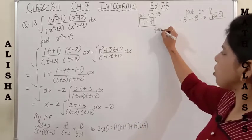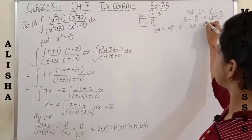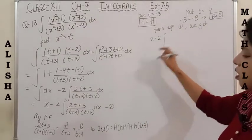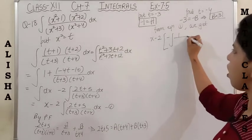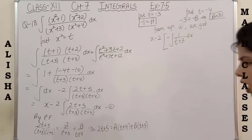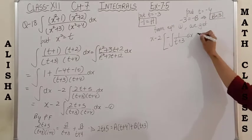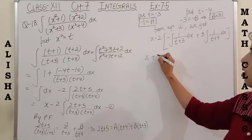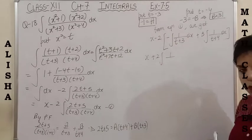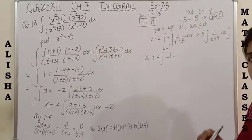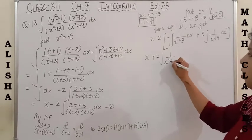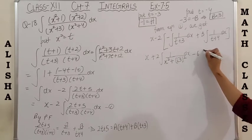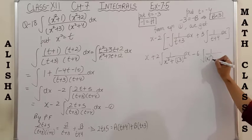Now replace these values in equation 1. We get x minus 2 times: A is −1 so we have −1 upon (t+3) dx, and B is 3 so 3 upon (t+4) dx. Opening it up: minus minus gives plus. Since the integration is with respect to x, we replace t by x². So t+3 becomes x²+(√3)², and t+4 becomes x²+2².